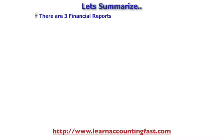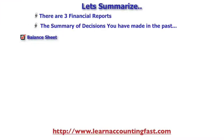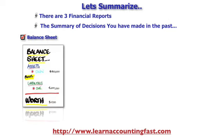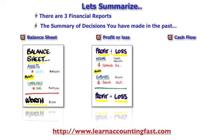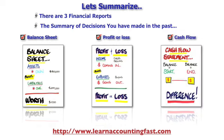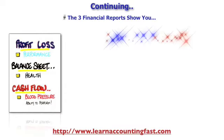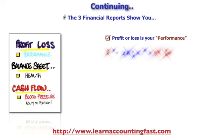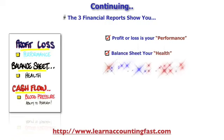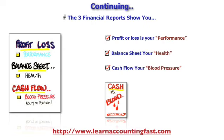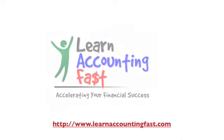So let's summarise — there are three financial reports, a summary of decisions that you've made in the past: a balance sheet, a profit and loss, and a cash flow. The three reports show you that profit and loss is your performance of activity during the period. Your balance sheet is the health of your company, and your cash flow is the blood pressure. Cash is blood — it gives you the ability to perform in the future. I'm your host Colin Burr. Thank you for watching this video.